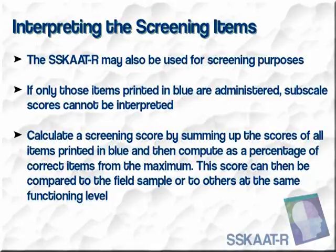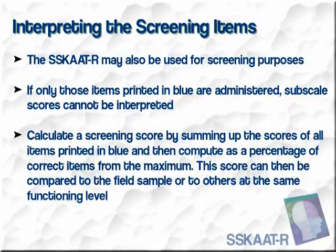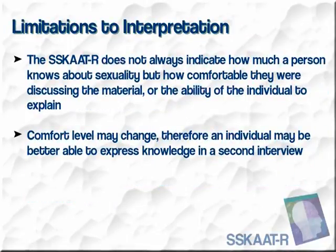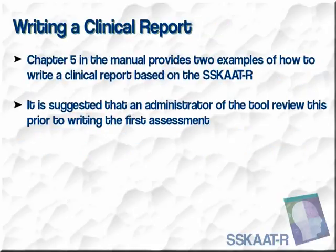The SCAT-R may also be used for screening purposes. If only those items printed in blue are administered, subscale scores cannot be interpreted. Calculate a screening score by summing up the scores of all items printed in blue and then compute it as a percentage of correct items for the maximum. This score can then be compared to the field sample or to others at the same functioning level. The SCAT-R does not always indicate how much a person knows about sexuality, but how comfortable they are about discussing the material or the ability of the individual to explain it. Comfort level may change, so an individual may be better able to express their knowledge in a second interview. In Chapter 5 of the manual, we provide two examples of how to write a clinical report based upon the SCAT-R.